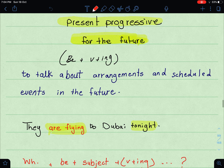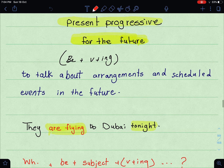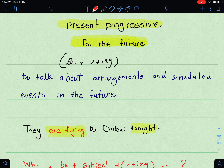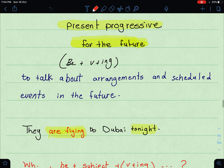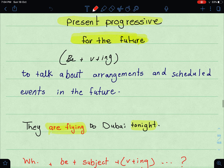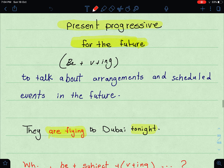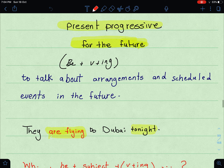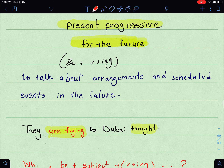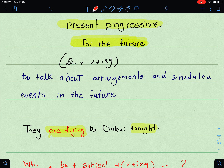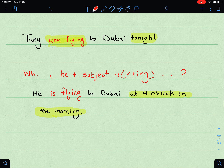Now let's move on. Sometimes we use the present progressive for the future — we use the present progressive but to show the future. You use be plus verb-ing. We use the present progressive for the future to talk about arrangements and scheduled events in the future — something that is arranged or scheduled in the future.